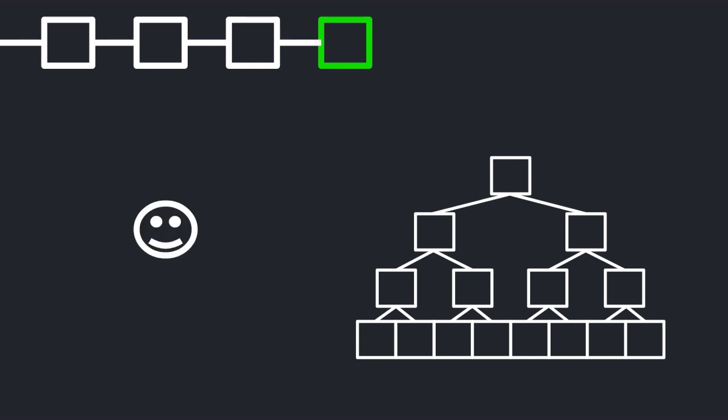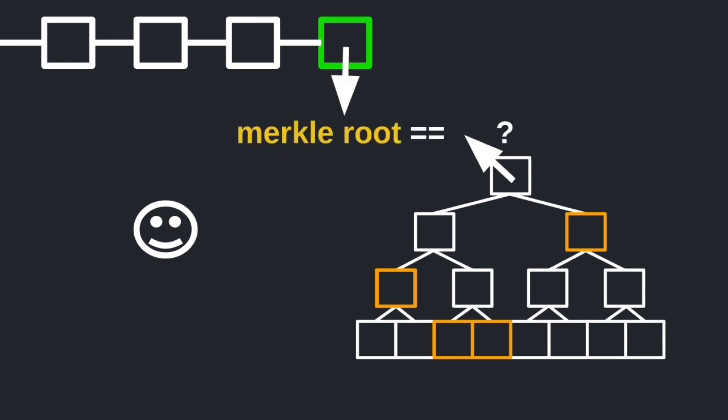Now if Alice wants to know if her transaction was included in the block, all she has to do is get these four hashes, recompute the Merkle root hash, and then compare it with the Merkle root hash that was committed to the block. If the two Merkle root hashes are equal then she knows that her transaction was included in the block.